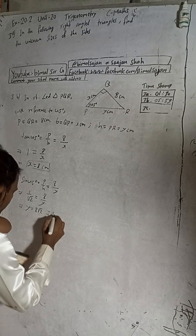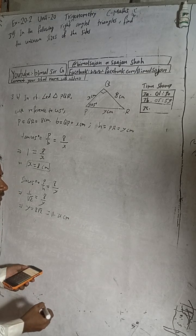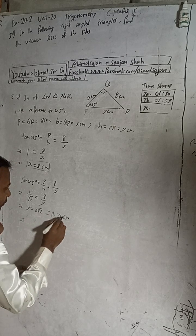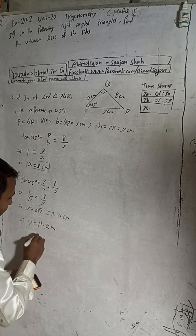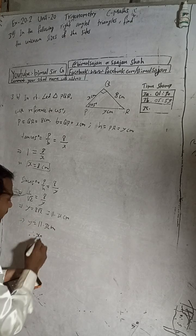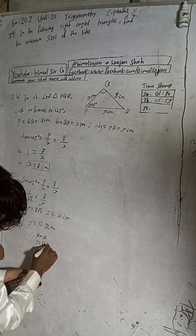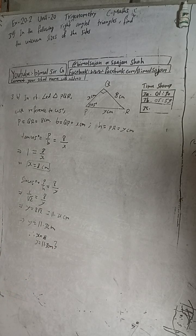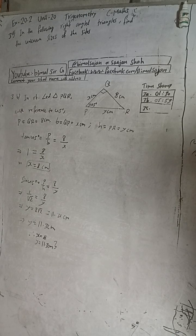So 8√2 equals approximately 11.31 cm. In the book the answer is 11.3 cm, so y = 11.3 cm. Therefore x = 8 cm and y = 11.3 cm. This is the complete solution of 3b. The timestamp is 5 minutes 15 seconds. Now I will write question 3c.